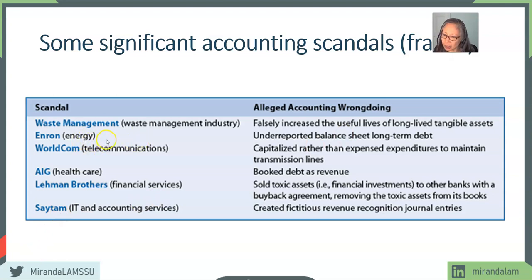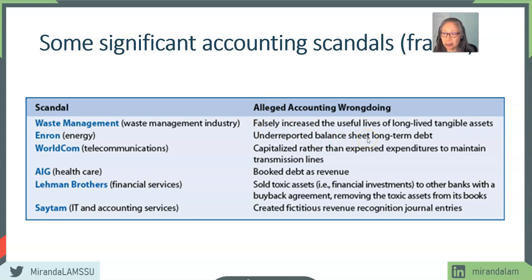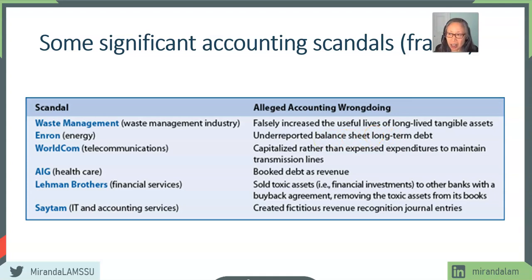Enron Corporation, an energy company, used illegal tactics to take liabilities off their books. They underreported long-term debt, which significantly affects the quality of all financial solvency ratios. They also underreported interest expense because these liabilities were not reported as part of the firm, even though the firm was still legally liable. Remember, all of these are illegal.